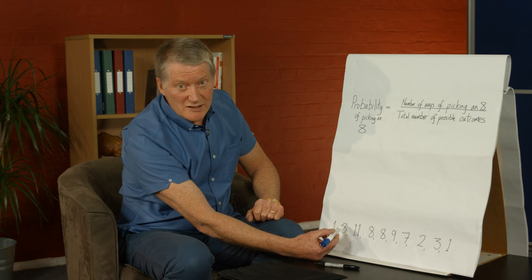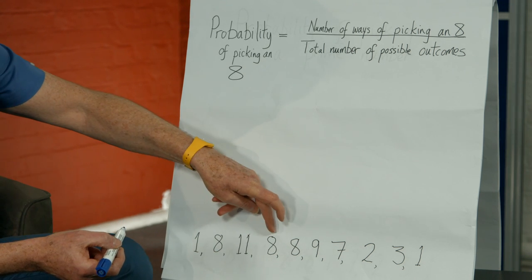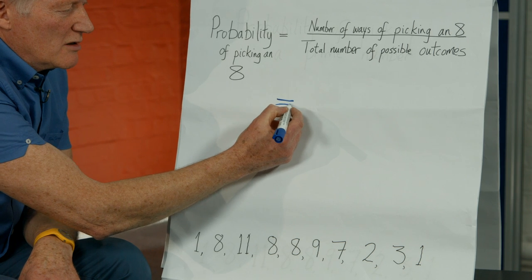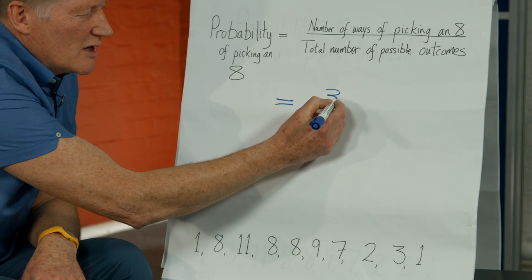The number of ways of picking an 8 is 1, 2, 3. So as a fraction, that's the number that goes in the numerator.